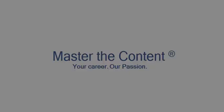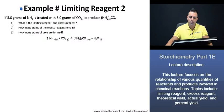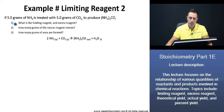Your career, our passion. Example limiting reagent 2. If 5 grams of ammonia is treated with 5 grams of carbon dioxide to produce urea, what is the limiting reagent and excess reagent? How many grams of the excess reagent remain? How many grams of urea are formed?